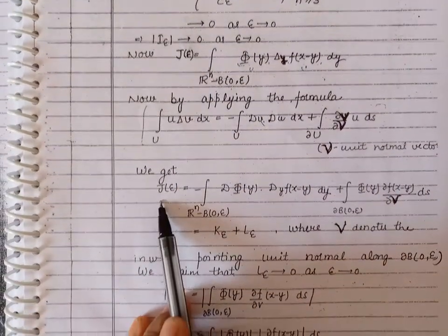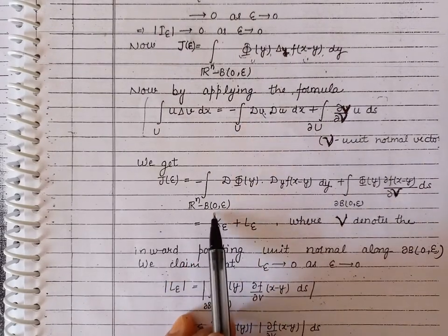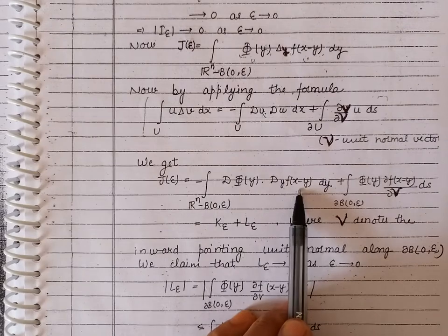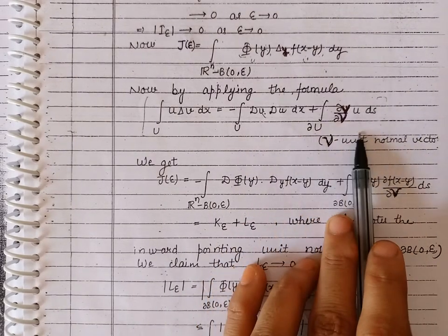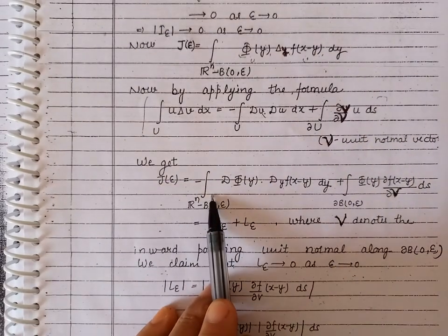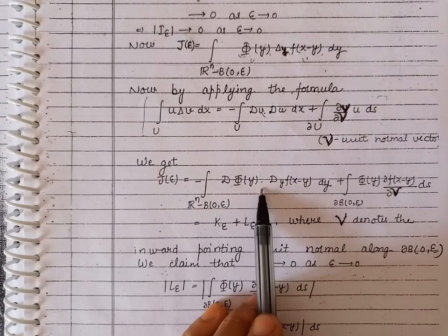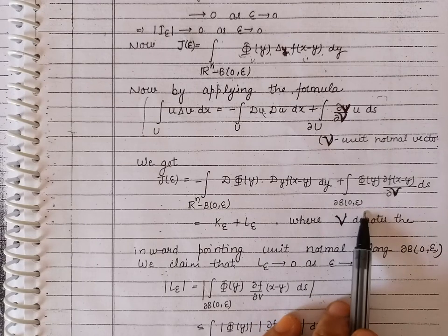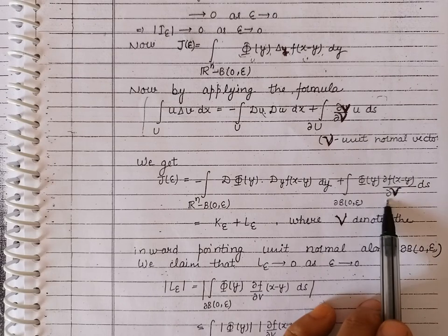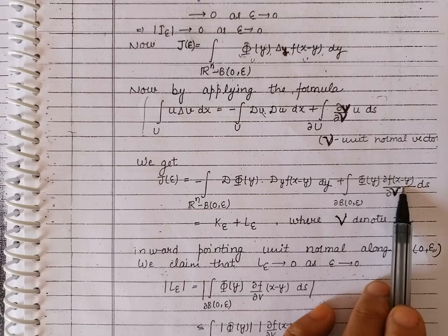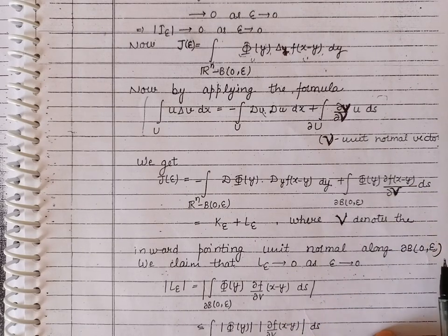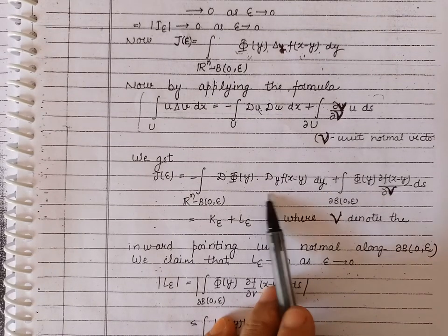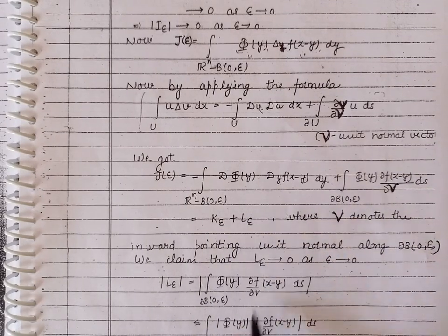Applying Green's formula with U as the complement of B(0, ε), and u = φ, v = f(x - y), the value of J becomes: -∫_{complement} ∇φ · ∇f(x - y) dy + ∫_{sphere S(0,ε)} (∂f(x-y)/∂ν) · φ ds, where ν is the inward-pointing unit normal along the sphere S(0, ε). We denote these two terms as K and L.